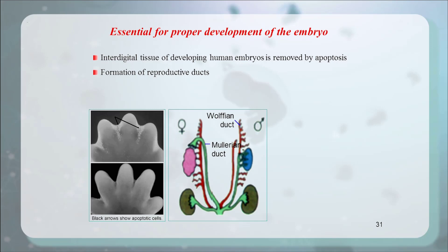Apoptosis plays an important role in the formation of reproductive ducts. As we discussed in embryology, reproductive ducts are all derived from two sets of ducts: the Müllerian duct and the Wolffian duct. If the embryo is female, the Müllerian duct develops fully and forms the female reproductive duct, including the fallopian tube and uterus. If the embryo is male, the Müllerian duct is deleted by apoptosis, and the Wolffian duct develops fully and forms the male reproductive duct, including the epididymis, afferent duct, and ejaculatory duct.